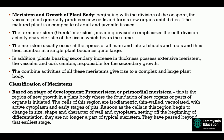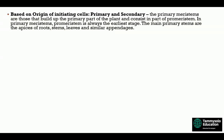Classification of meristems: based on stage of development, we have pro-meristems or primordial meristems. This is a region of new growth in the plant body where the foundation of new organs or parts of organs is initiated. The cells of this region are isodiametric, thin-walled, vacuolated, with active cytoplasm. As soon as cells in this region begin to change in size, shape, and character of wall and cytoplasm — setting off the beginning of differentiation — they are no longer part of the typical meristem.